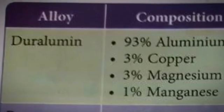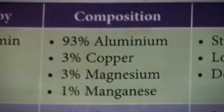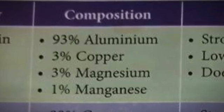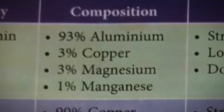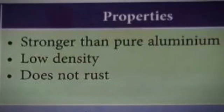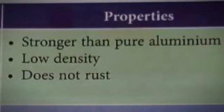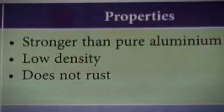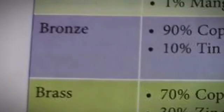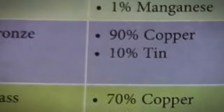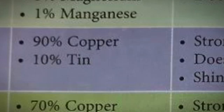First, duralumin is made up of 90% aluminium, 2% copper, 2% magnesium, and 1% manganese. It is stronger than pure aluminium, has low density, and does not rust. These properties make duralumin suitable for making the body of airplanes, electric cables, and racing bicycles.